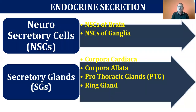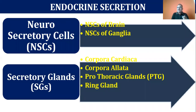The neuro-secretory cells are basically nerve cells — cells engaged in secretion. They are located on the brain. We call them lateral neuro-secretory cells and median neuro-secretory cells, which are located in the brain. A few neuro-secretory cells are also located in the ganglia.